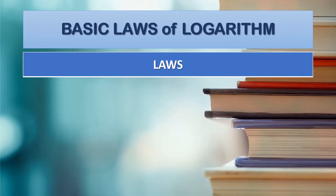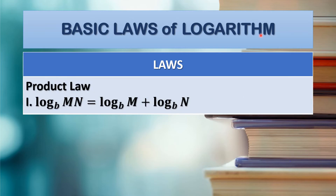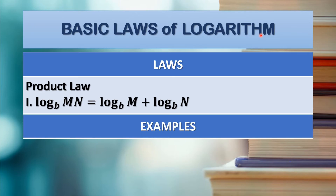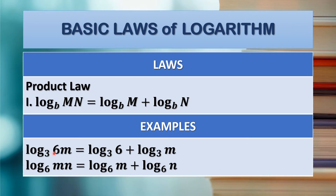Next are the basic laws of logarithm. First law: the product law. The log of m times n with base b is equal to the sum of the log of m with base b and the log of n with base b. Example: log of 6 times m with base 3 is equal to log of 6 with base 3 plus log of m with base 3. Next example: log of m times n with base 6 equals log of m with base 6 plus log of n with base 6.